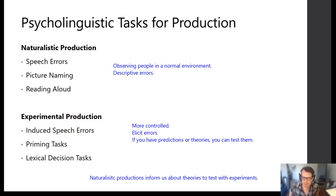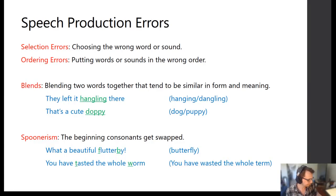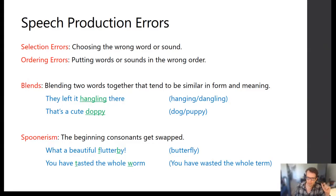We'll talk about about four types of production tasks and get to see examples of a lexical decision task, a priming task, and an induced speech error task. There are two broad types of speech errors: selection errors — when you pick the wrong word or sound — and ordering errors — when you have the right words or sounds but they're in the wrong order. As we go through each type, think about which category it falls into.